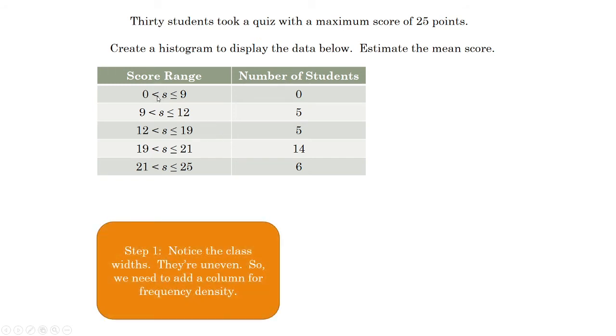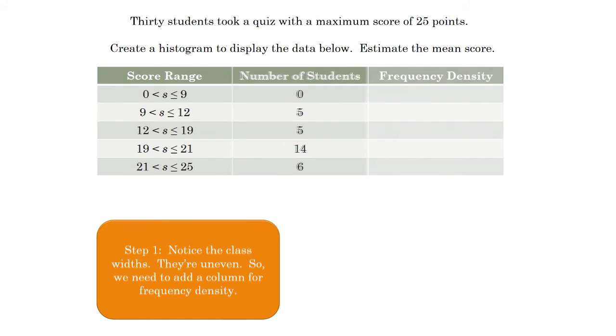First thing you got to look at, because it doesn't tell you use frequency density right here, it just tells you to make a histogram. You have to use frequency density in this one because the class widths are uneven. This is a class width of 9, and then 3 and 7, and then 2 and 4. So we have to use a histogram. Now I randomly chose these class widths just because they don't really make a whole lot of sense, but that's how it's set up so that's what we're going to use.